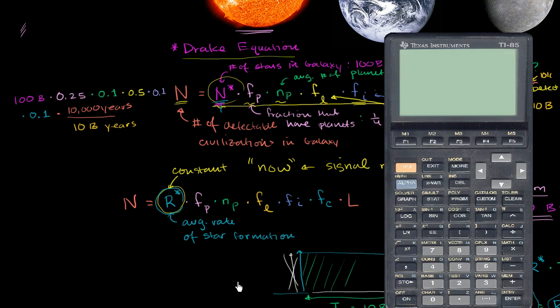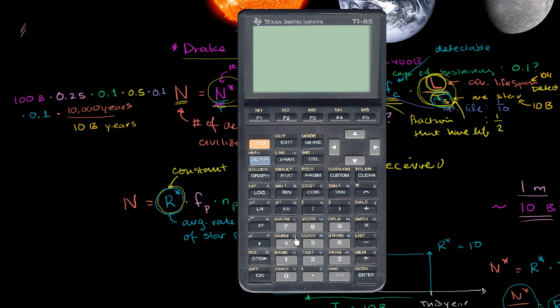So let's calculate all of this. Let's get my handy TI-85 out. And so we're going to have 100 billion. That's 1 times 10 to the 9th. Sorry, that's not 1. That's 100 times 10 to the 9th. So let me clear it. Or you could have 1 times 10 to the 11th. That is 100 billion times 0.25 times 0.1 times 0.5 times 0.1 again times 0.1 times 10,000 divided by 10 billion. So that's 1e10, 1 times 10 to the 10th power, 1 with 10 zeros. So let's see what we get.